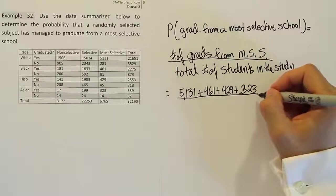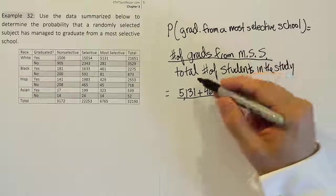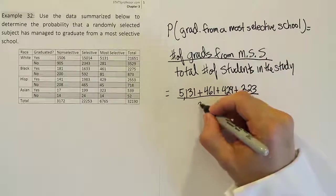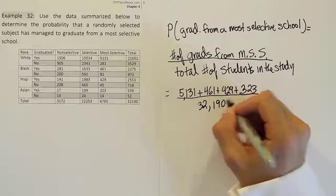Okay, so there's our numerator. And for the denominator, we just need the total number of students in the study. The grand total is 32,190. So quite a big study.